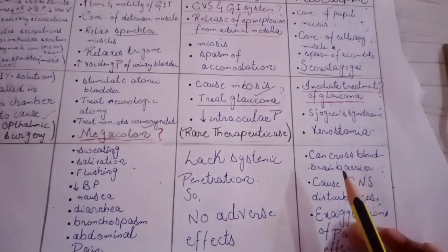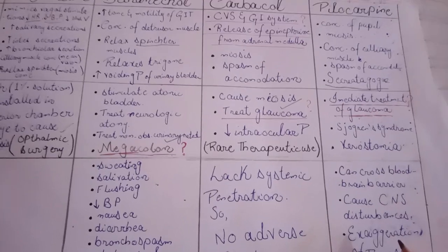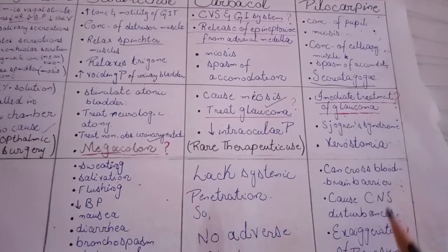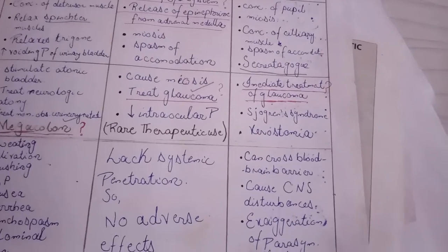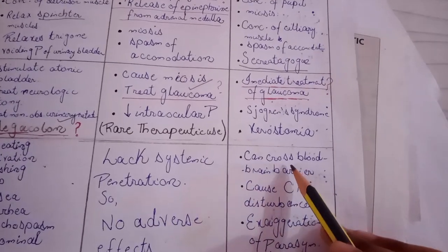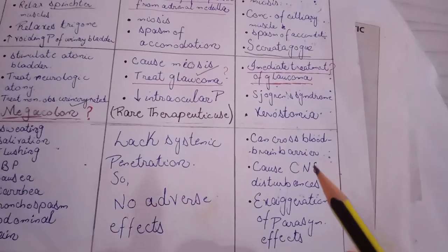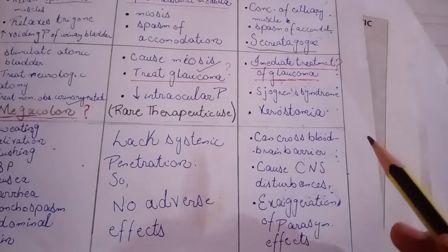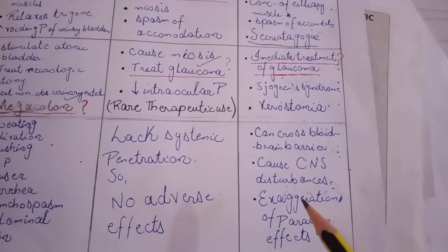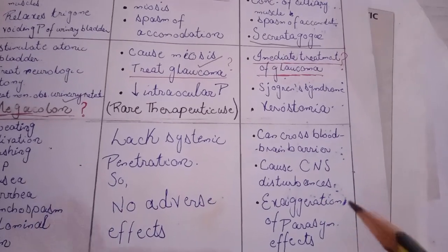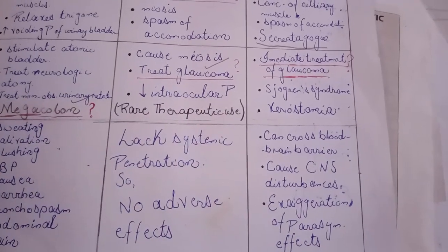Pilocarpine is a tertiary amine, meaning there is no charge on it. If there is no charge, it means that it can easily cross the blood-brain barrier because it is non-polar. So it can easily cross the blood-brain barrier and enter the CNS, which may cause CNS disturbances as well as exaggeration of its parasympathetic effects.